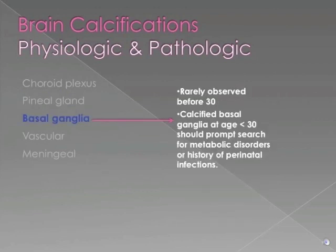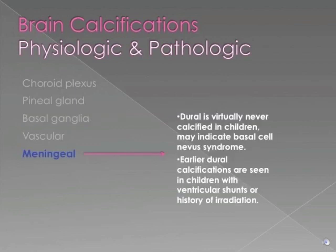The basal ganglia, which often demonstrates calcifications in adults over 30, is rarely calcified in children. Seeing calcifications in the basal ganglia should suggest either perinatal infection or an underlying metabolic disorder. The meninges, or the dura, are virtually never calcified in children, and findings of dural calcifications should at least prompt consideration of the diagnosis of basal cell nevus syndrome. However, children who have undergone shunting or who have received radiation may demonstrate calcifications of the dura at an earlier age.